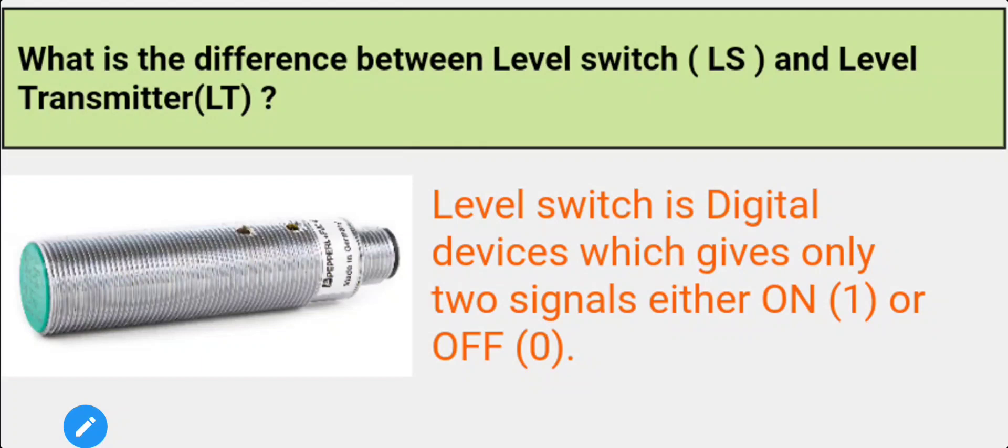A level switch is a digital device which gives only two signals, either one or zero, like on or off.